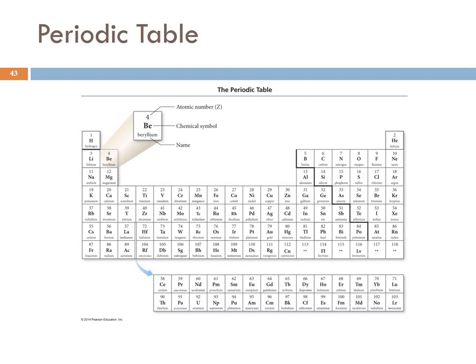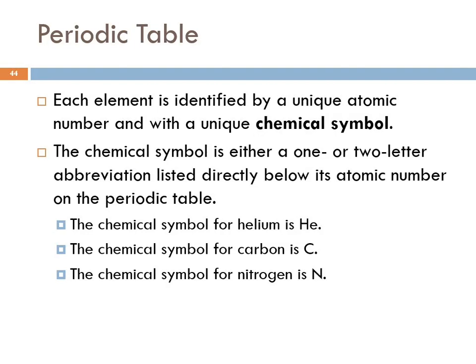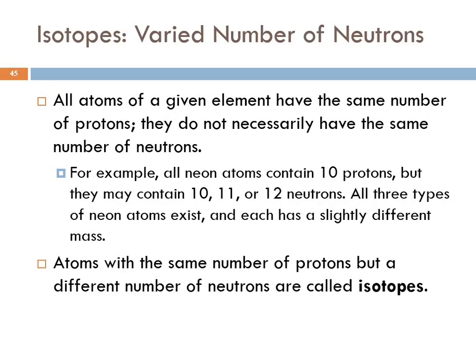We identify each element using its atomic number and a chemical symbol. I quizzed you on those this morning. I'm not making you memorize all of them, but the ones that we're most likely to encounter. The chemical symbol for an element is one or two letters. The first letter is always capitalized. If there is a second letter, it is never capitalized. And it's very important to follow that convention. The symbol for helium is HE. The symbol for carbon is capital C. The symbol for nitrogen is capital N.